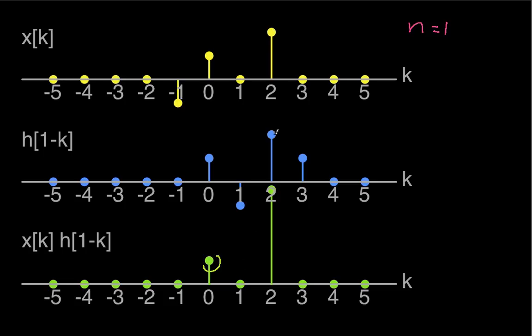I have two times two, which gives me this four up here, zero times three, and everything else is zero times zero. So this says that y of one is equal to one plus four, which is five.